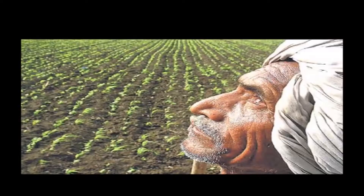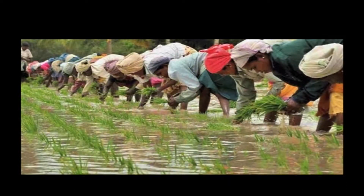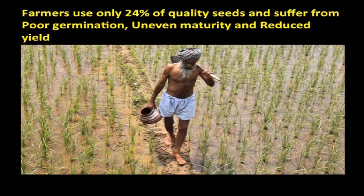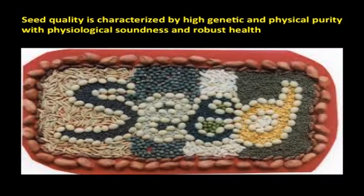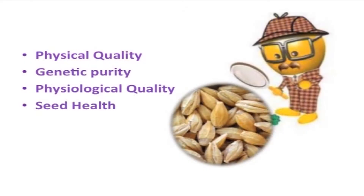Farmers should be provided with only quality seeds, because use of quality seeds alone can provide 20 percent higher yield, as we have seen in earlier sessions. At present, only 24 percent of Indian farmers use quality seeds; the rest use seed stored as grain. Thus, farmers suffer gaps in the field due to poor germination, uneven maturity, and reduced yield. Seed certification ensures that only quality seeds are certified and provided to farmers. Seed quality is characterized by high genetic and physical purity, accompanied with physiological soundness and robust health.